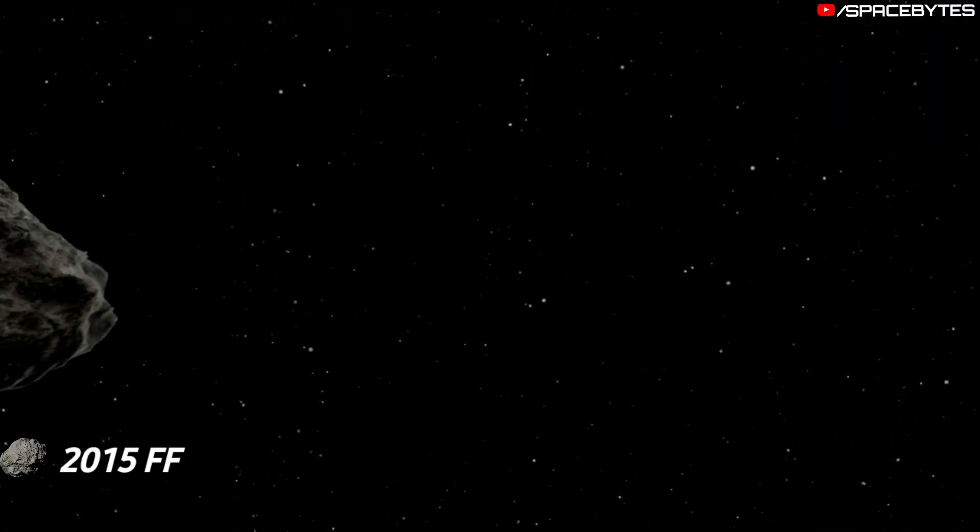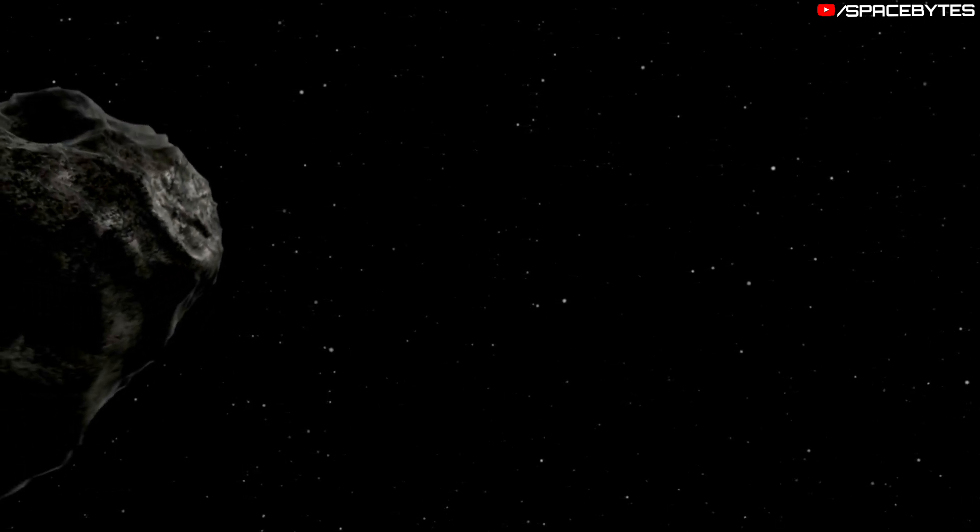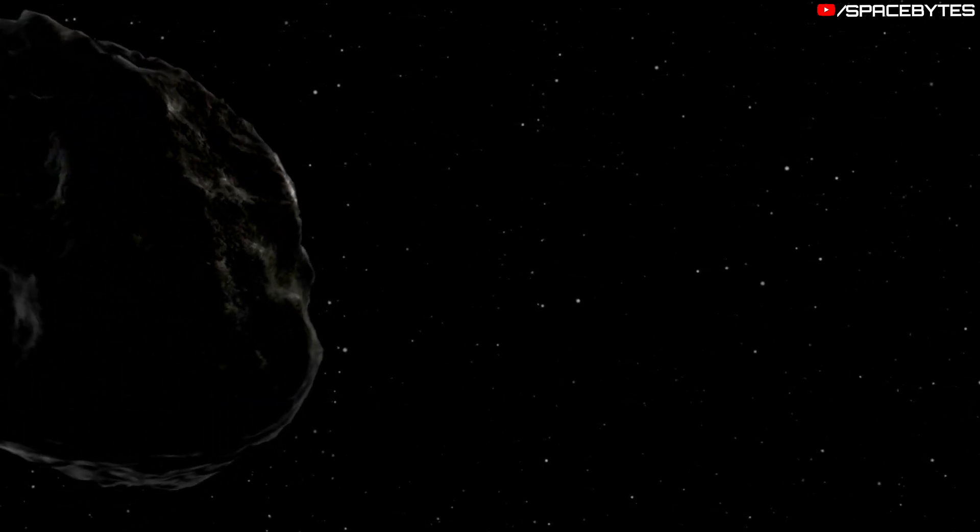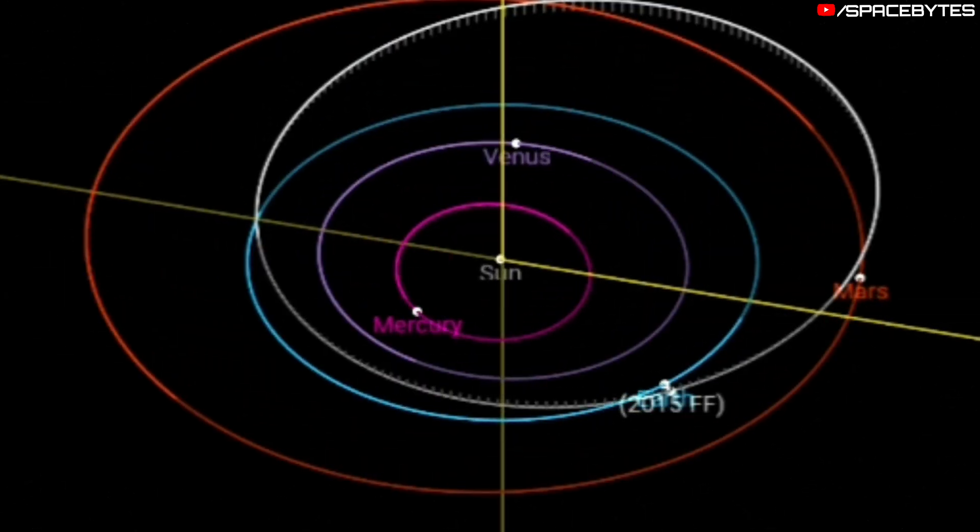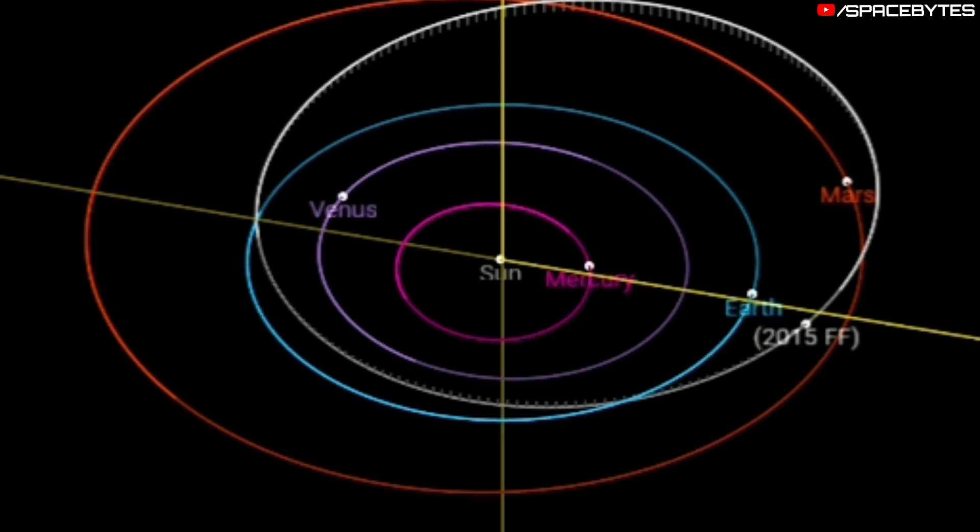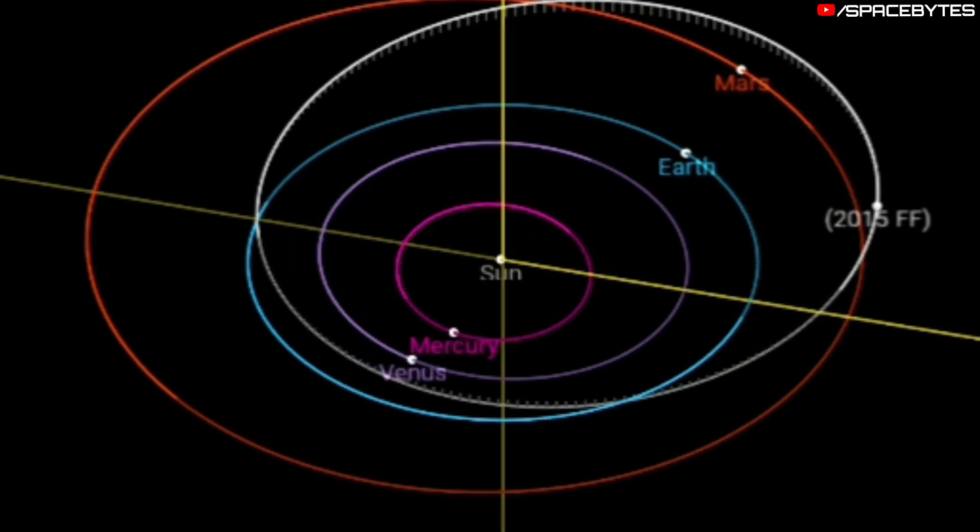The asteroid 2015 FF is smaller than the other two, approximated to be roughly around 53 feet in diameter. The asteroid 2015 FF was discovered on March 16, 2015.